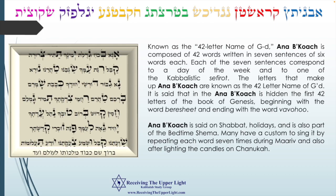It is said that the Ana B'Koach is hiding the first 42 letters of the book of Genesis, beginning with the word Bereshit and ending with the word Tohu va'Vohu. The Ana B'Koach is recited on Shabbat, holidays, and is also part of the bedtime Shema. Many have accustomed to reciting it by repeating each word seven times during Ma'ariv — the evening prayer — and also after lighting the candles on Hanukkah.